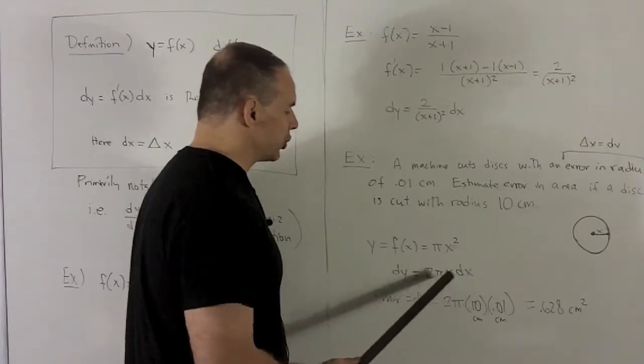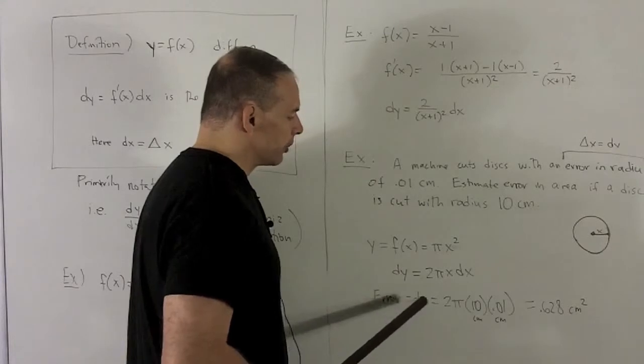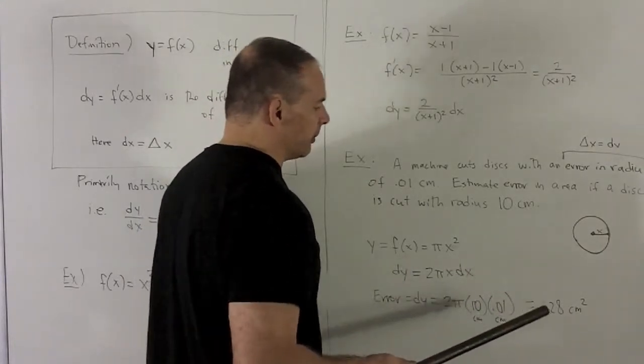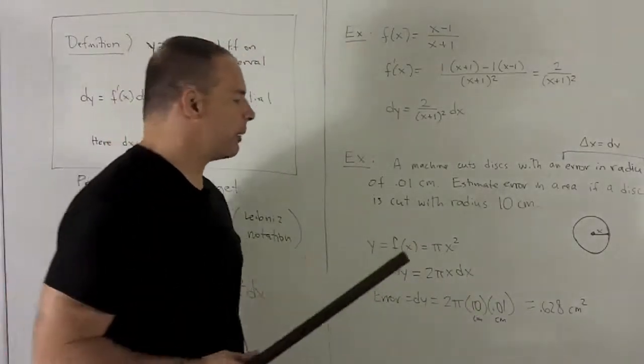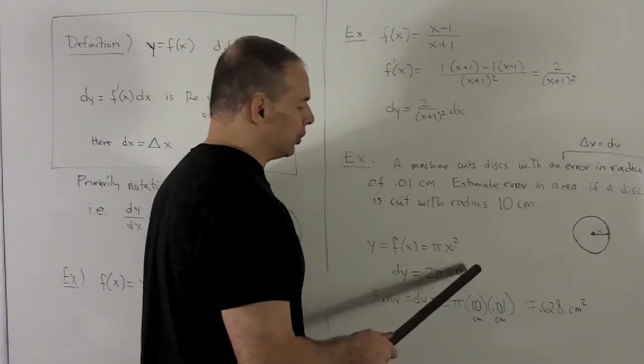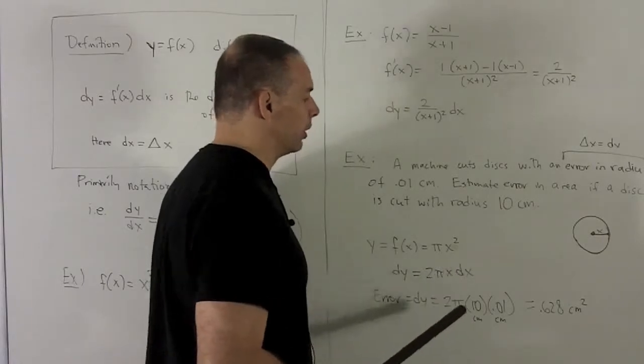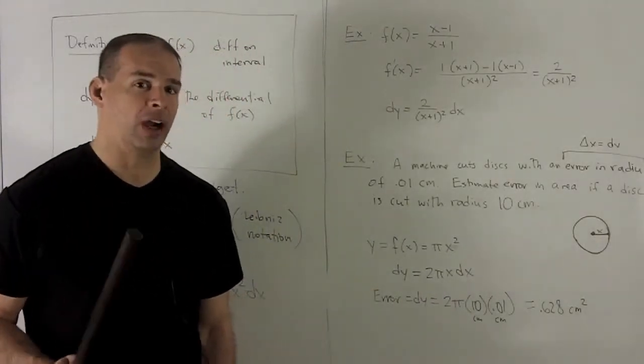We use our differential to get an estimate for the area, for the error. So I'm going to have 2 pi 10 times 0.01. And then that's going to give me 0.628 centimeters squared. And the centimeter squared will come out because dx is a measure in the error of a length. So it has unit centimeter. And x is a length. So that has unit centimeter too. So 0.628 centimeter squared is our estimate for the error in the area.